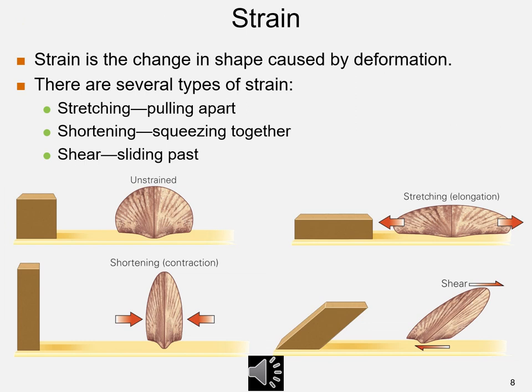The first diagram shows an unstrained cube with a fossil shell. The second diagram shows a rectangular prism with a horizontally stretched or elongated fossil shell, whose longest length is horizontal. The third diagram shows a rectangular prism with a horizontally shortened fossil shell, whose longest length is vertical. Shear strain tilts the cube into a parallelogram and changes the angular relationships in the shell.